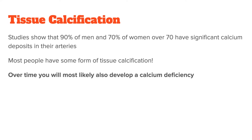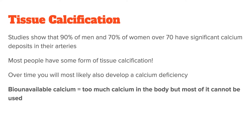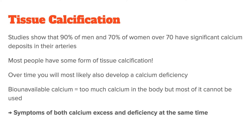Unfortunately, over time, the excess calcium won't be your only problem. As more and more calcium precipitates into the tissue and is lost in places where you need it, you will most likely also develop a calcium deficiency as well. This phenomenon is called bio-unavailable calcium — it basically means that you have too much calcium buildup in the body but most of it cannot be used properly. So you have symptoms of both excess unavailable calcium in the tissue as well as a deficiency of available calcium in the blood and elsewhere where it's supposed to be.